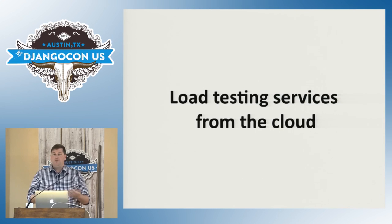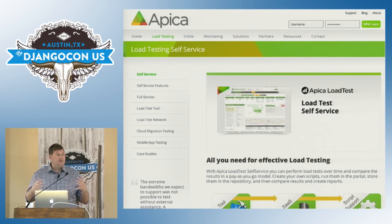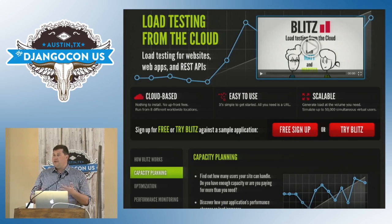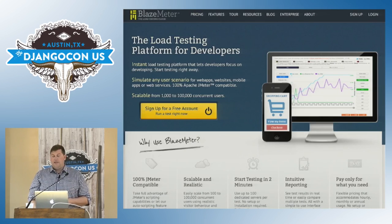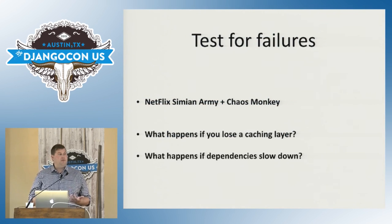For cloud-based load testing services, I'm a fan of Apica — they have a global footprint and make it easy to send 50,000 users at a URL and get a report. Blitz.io is probably the easiest to get started with — they have a free plan where you can ramp up 500 users to a URL and plot response time versus concurrency. BlazeMeter works well for complex interactions or mobile device testing. Sometimes it's a business problem you're trying to solve and buying a service is better than building everything yourself.